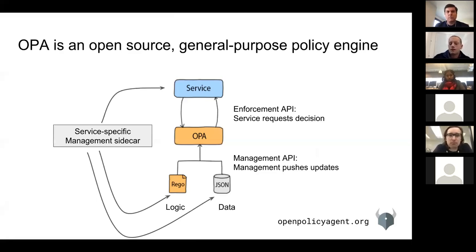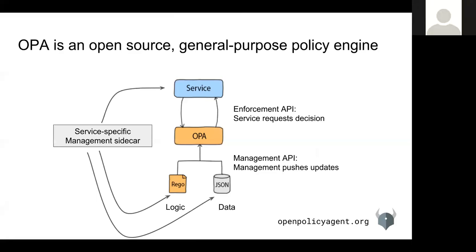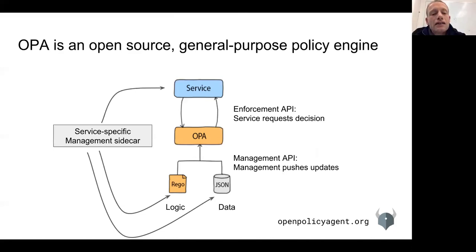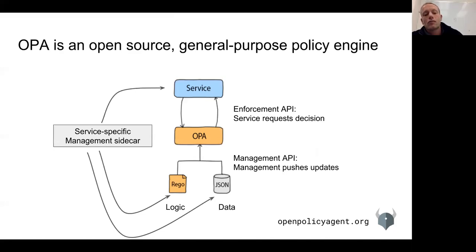You mentioned pulling policies out of the Kubernetes API server — are those the RBAC policies? Do you essentially have enforcement for RBAC policies in OPA? Not today — we could. Torin did a translation of a collection of RBAC policies and showed how you could write them in OPA, though we didn't automate that.